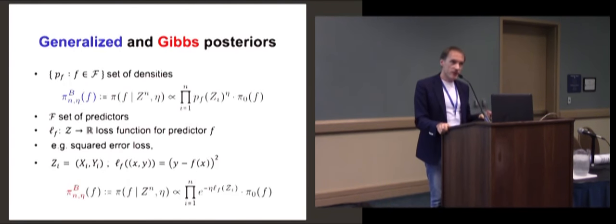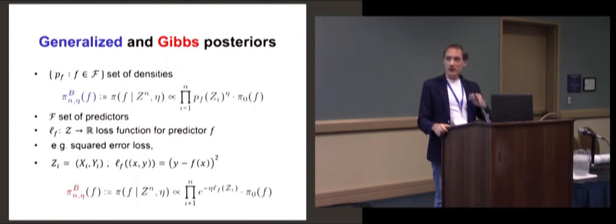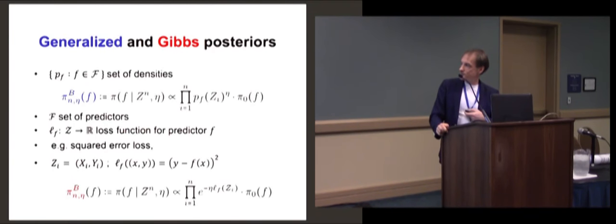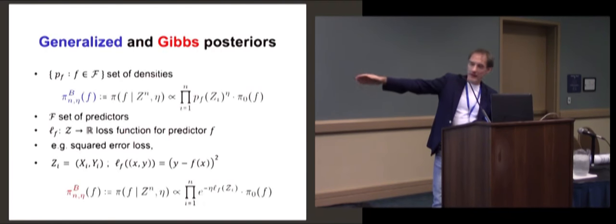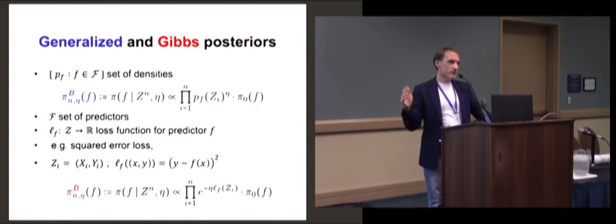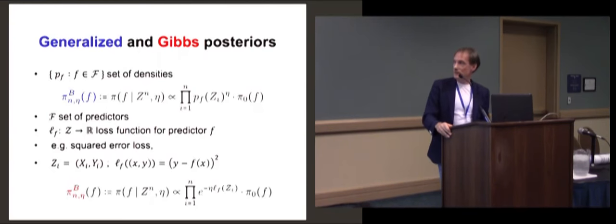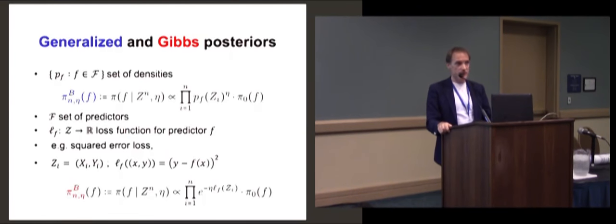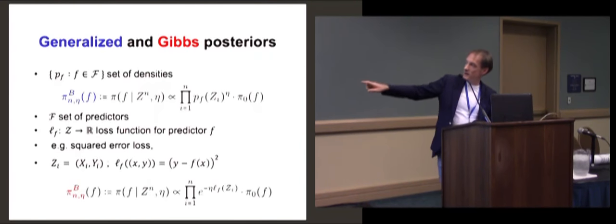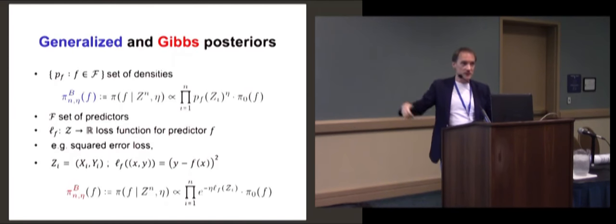In the Gibbs posterior, F is a set of predictors — usually functions from X to Y — with some loss function. The Gibbs posterior is the density of F given the data, proportional to e to the minus the loss. So the better F predicts on the sample, the larger its posterior. You can do this with any loss function, including the logarithmic loss. For log loss, the E and the log cancel, so you can also think of it as a further generalization of Bayes, where now you have a posterior over predictors rather than probability distributions.